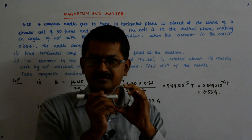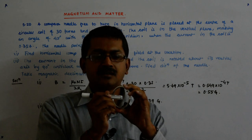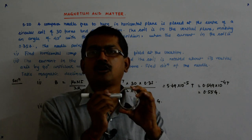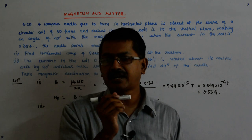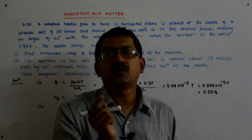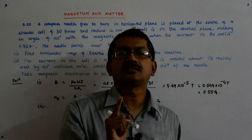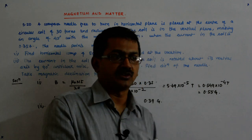So B cos 45, B sin 45. So there is another 0.39 gauss of field that is now acting from east to west. So my needle starts pointing east to west. Needle points east to west.